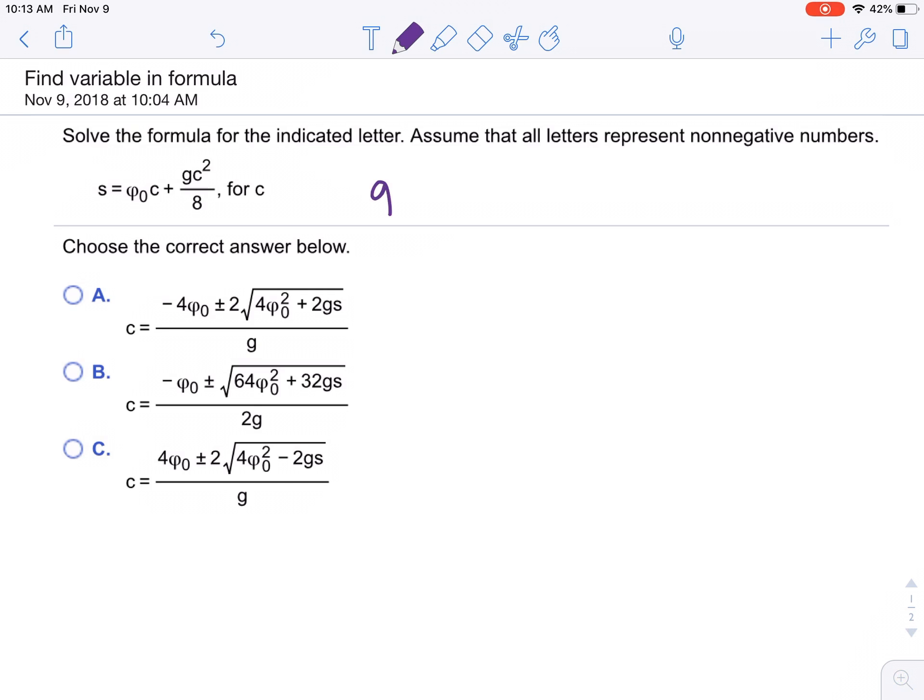Rewrite it as gc squared over 8 plus v sub 0 c minus s equals 0. Multiply both sides by 8 just to get rid of fractions.